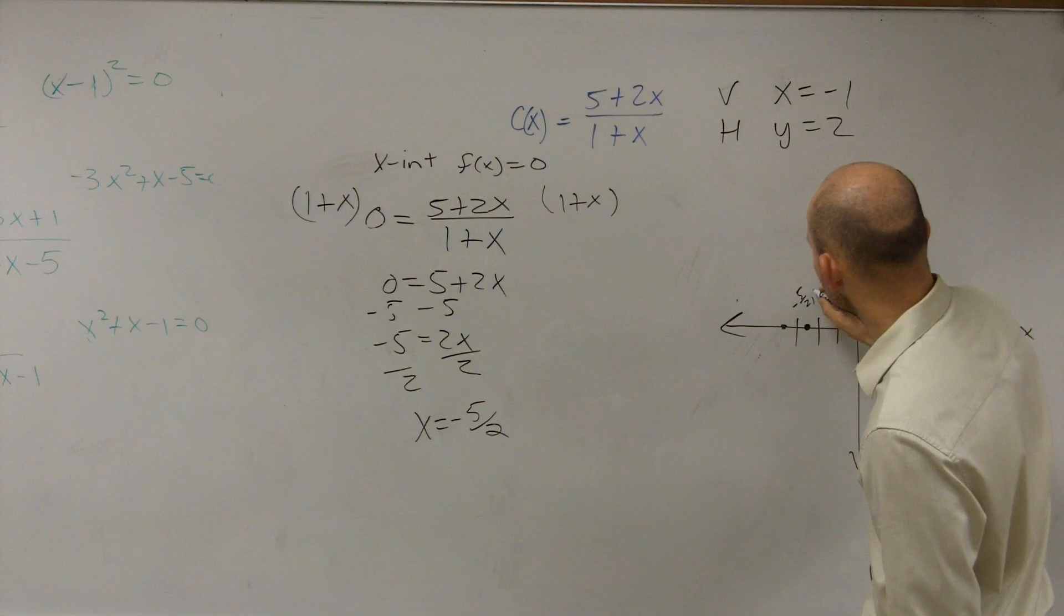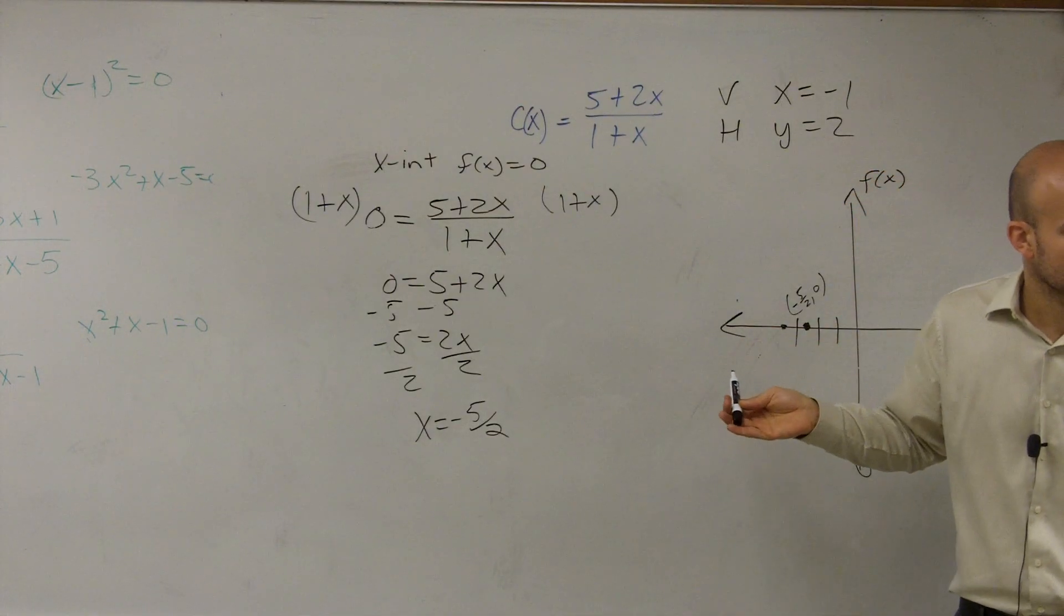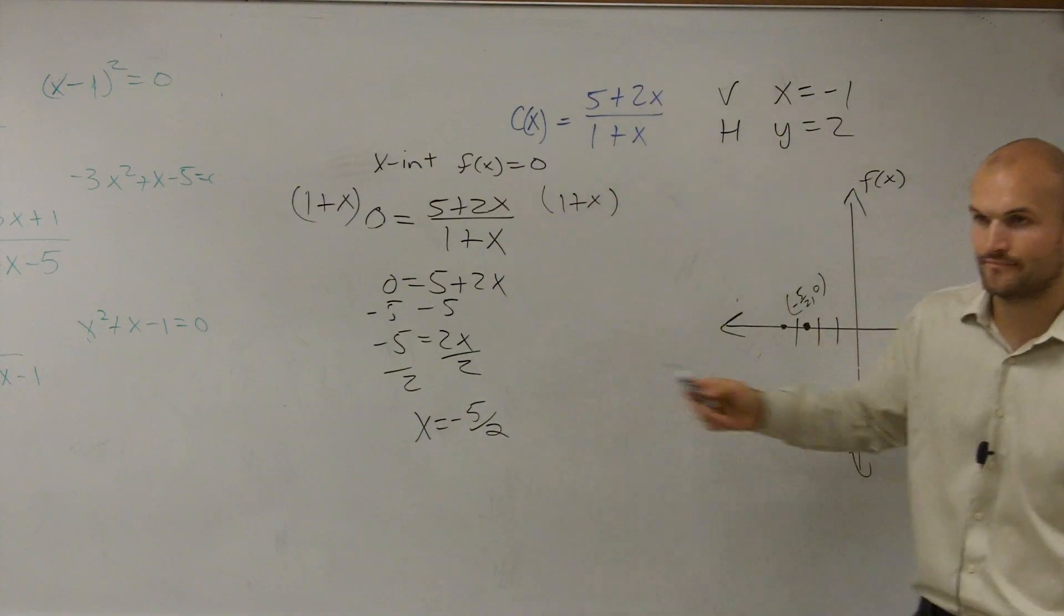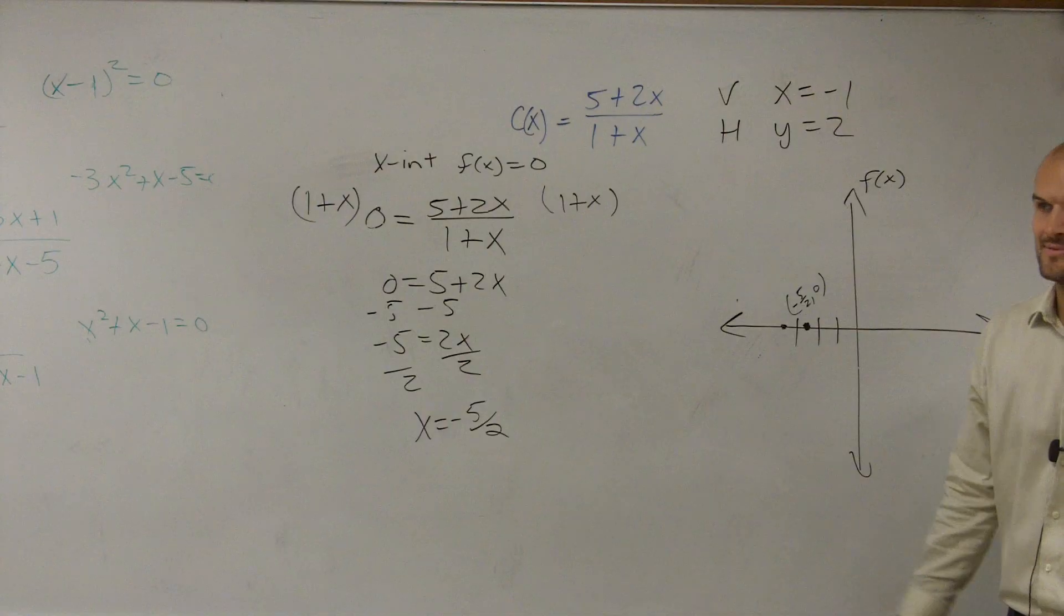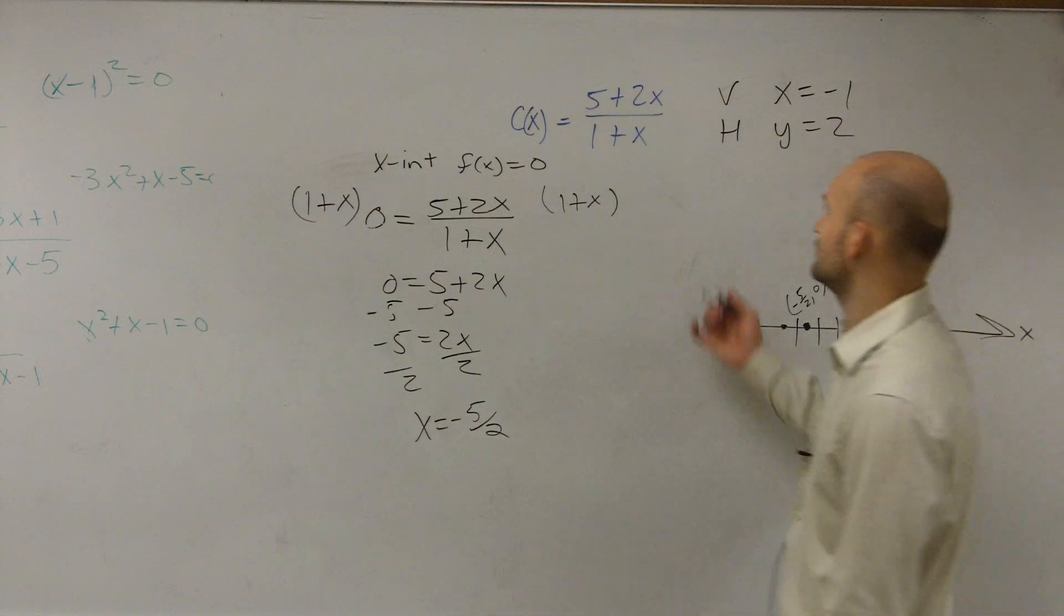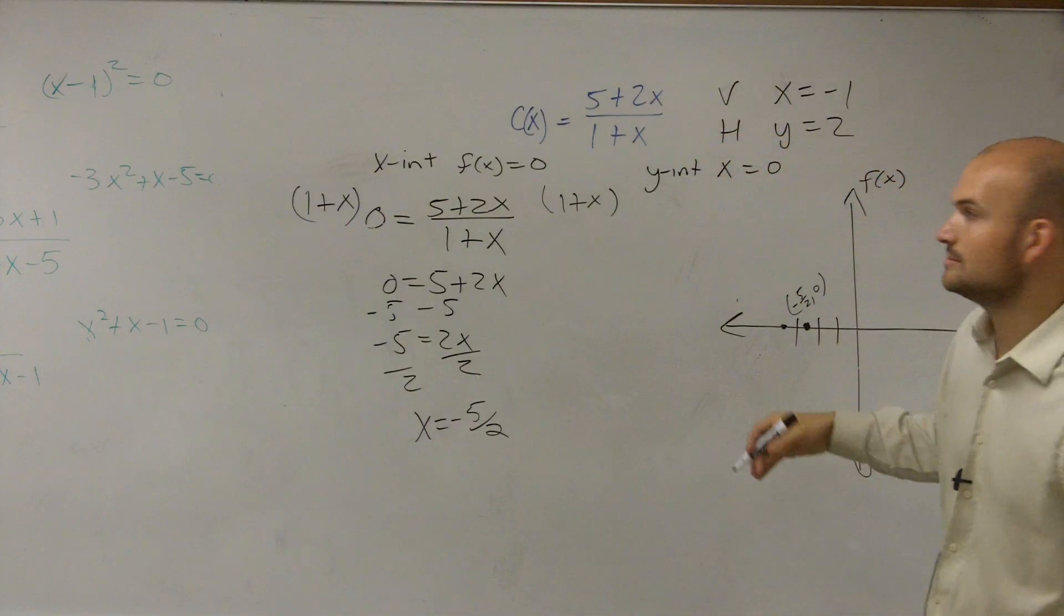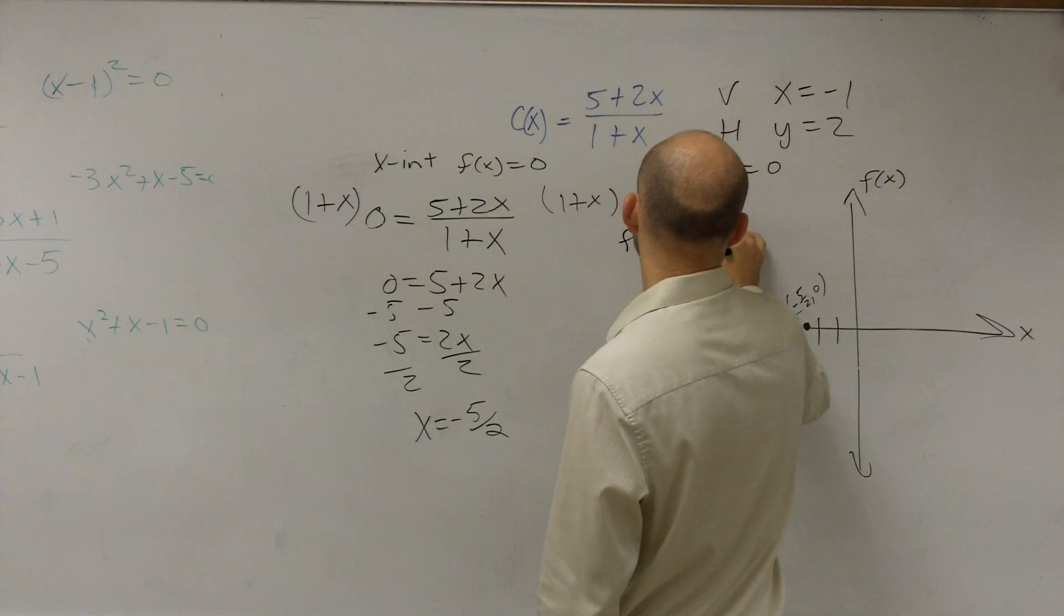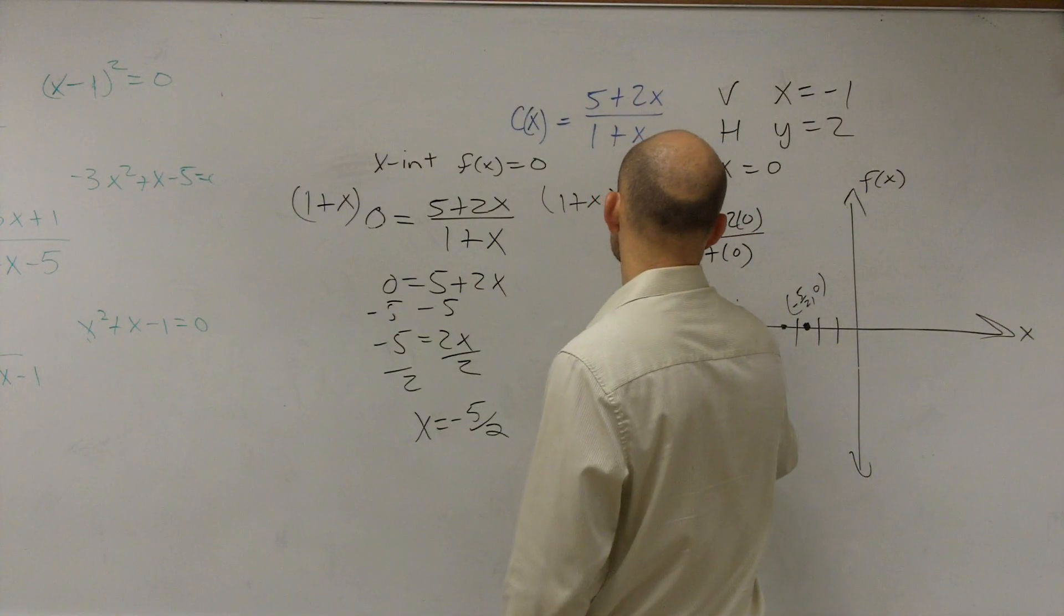So we could say negative five halves comma zero. That's your x-intercept. That's where the graph crosses at negative five halves because I did my work there. Now, so if f of x equals zero is for your x-intercept, what do you think equals zero for your y-intercept? The x, right? So you just write out y-intercept is when x equals zero. So what do we do? Just put in zero for x. So you do f of x equals five plus two times zero divided by one plus zero.